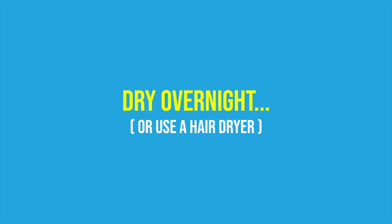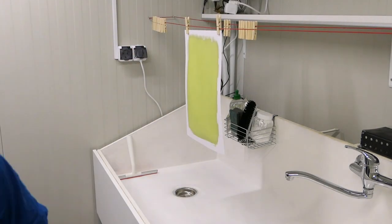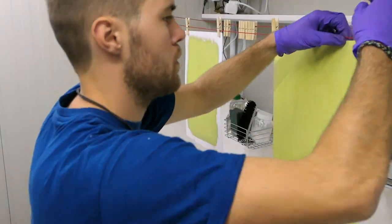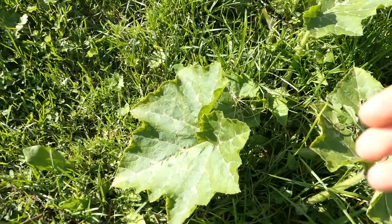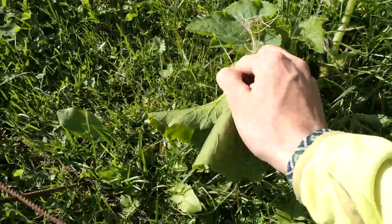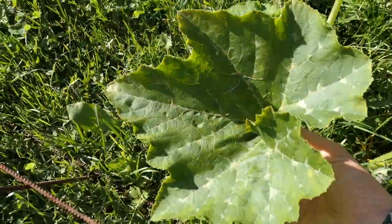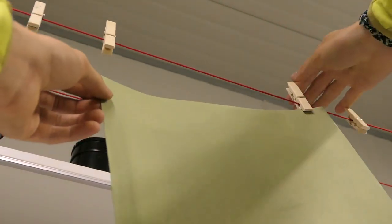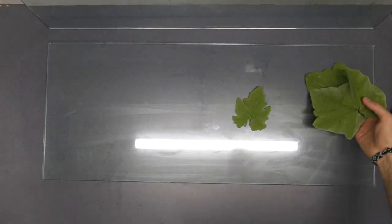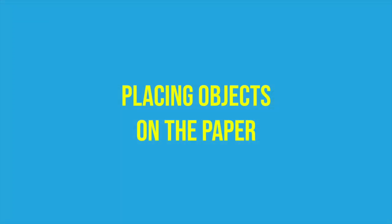There you go, papers are coated. Now you need to leave them drying over the night or just use a hairdryer to speed up the process. While papers are drying you can just pick up some printing materials. Papers have dried so we can start placing the materials we picked on the paper.